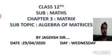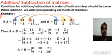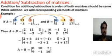Let's see addition or subtraction of matrices. First we need to learn about the condition when addition or subtraction is possible. The addition or subtraction is possible only when both the matrices are of same order. For different order matrices, addition and subtraction does not exist. And while adding, we add the corresponding elements.